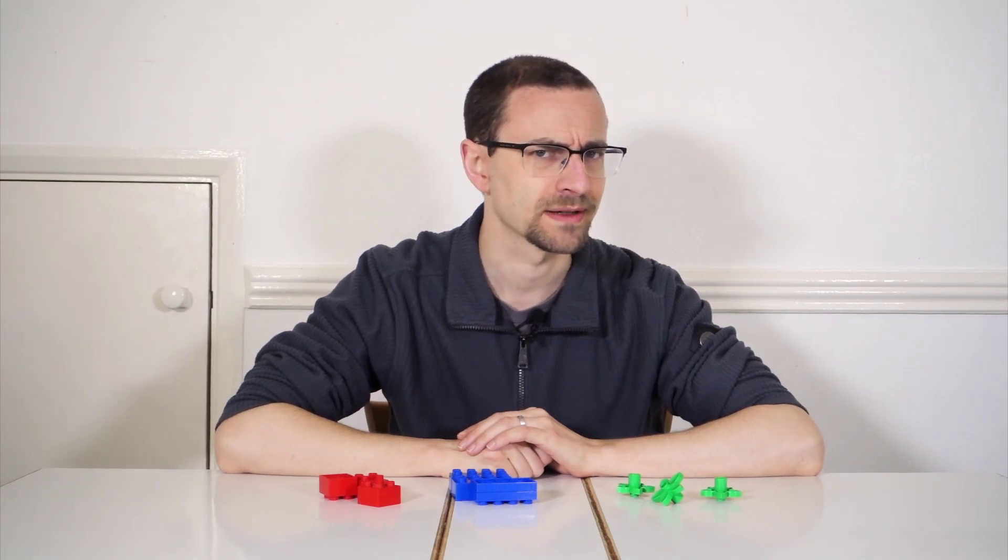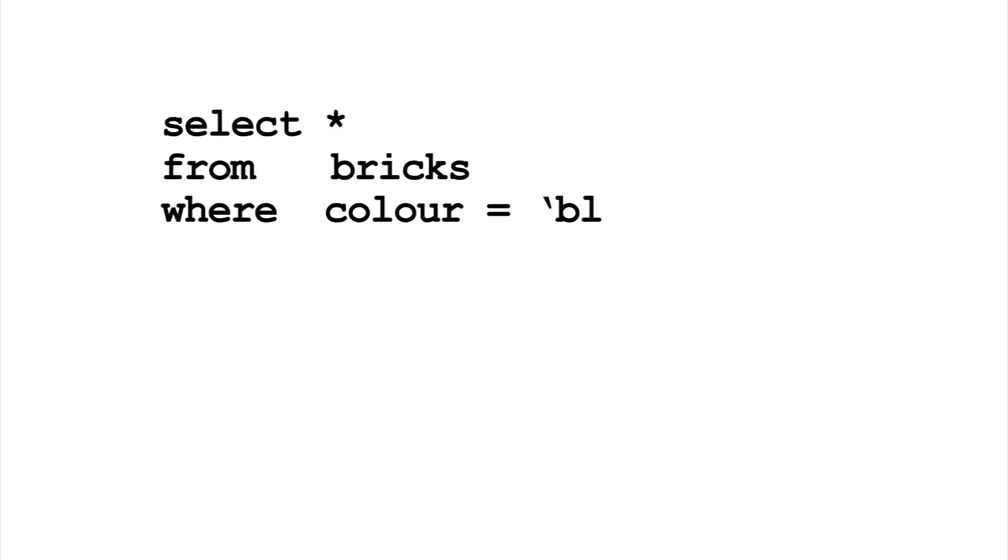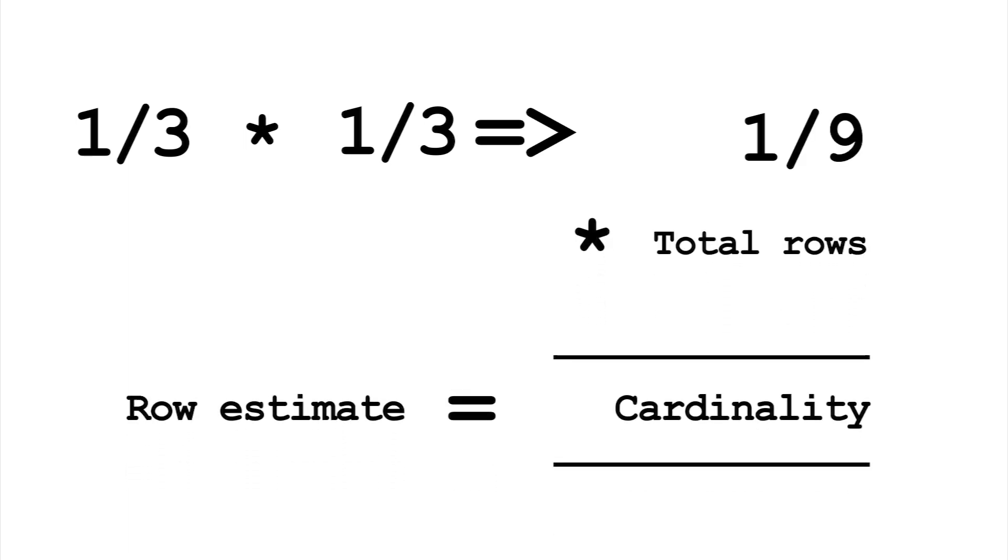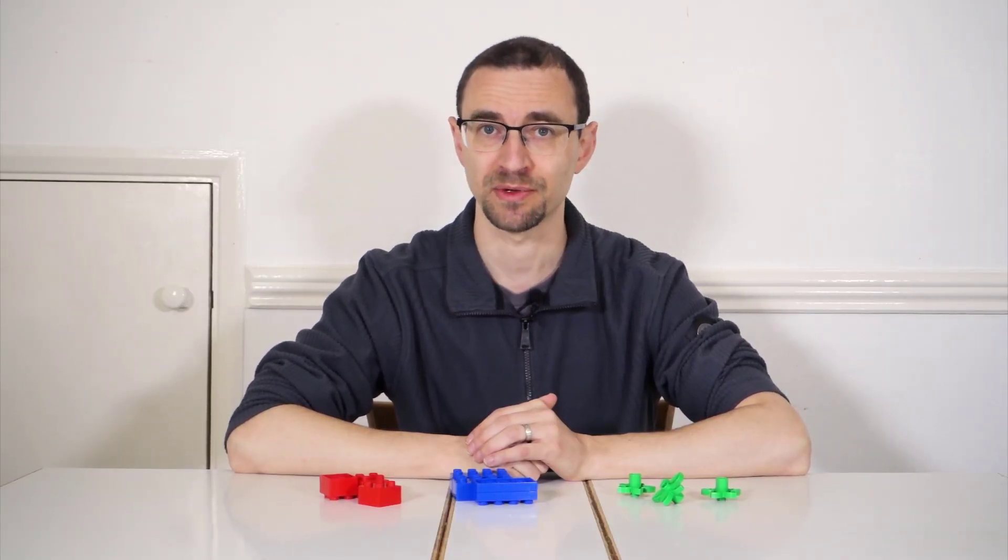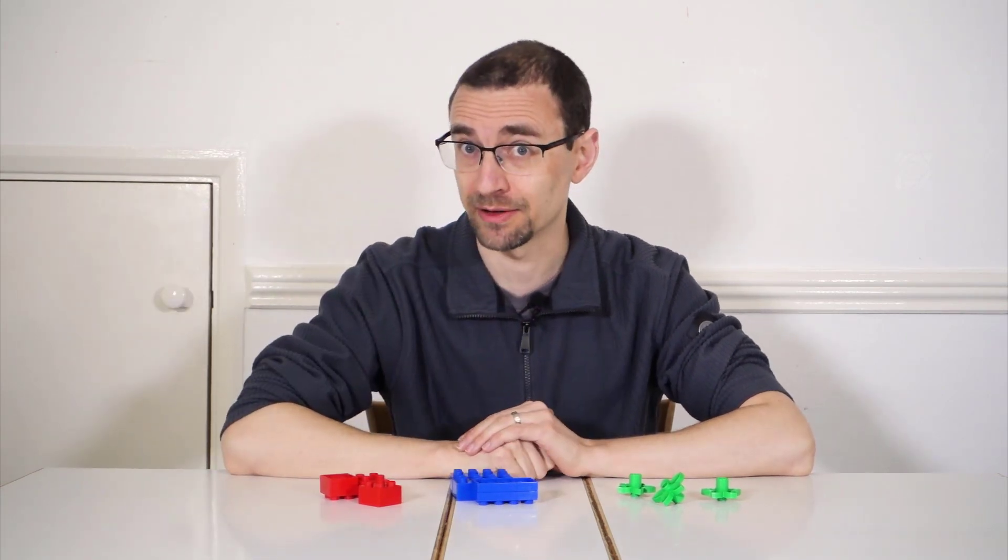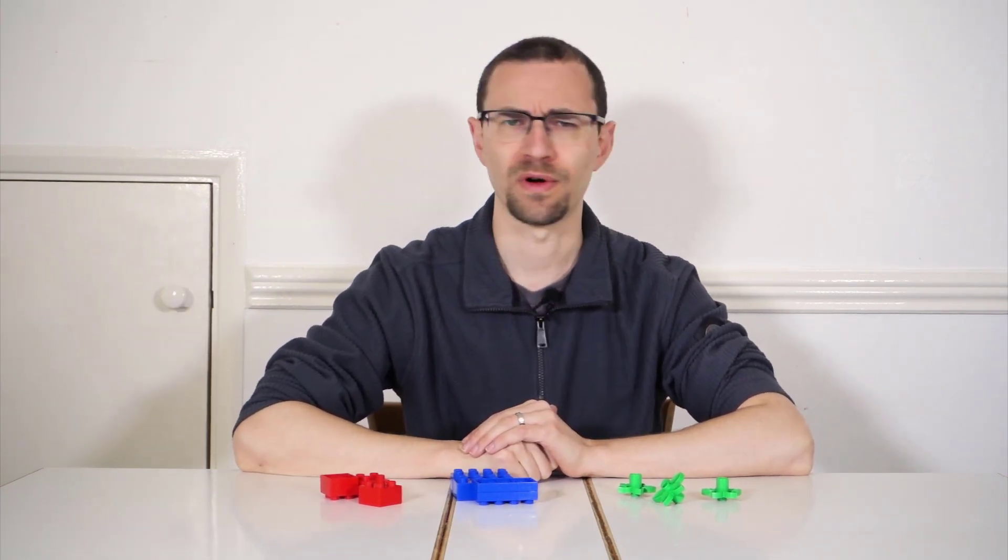But what does the optimizer think? If you search for blue cubes, it says there's three different colors. So the selectivity of color is one-third. The same applies for shapes. Then by default, it gets the combined selectivity in the same way you calculate the probability of independent events. By multiplying the fractions together to get one-ninth, leading to an estimated cardinality of one. I'm never going to get this number of bricks back when searching by color and shape. I'm either going to get three or zero.